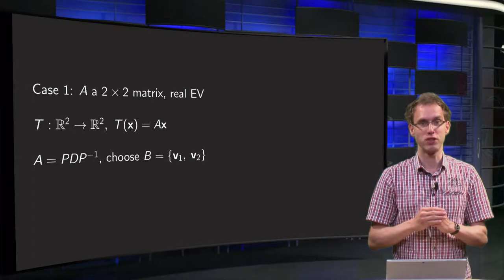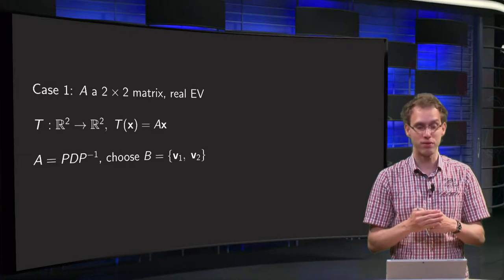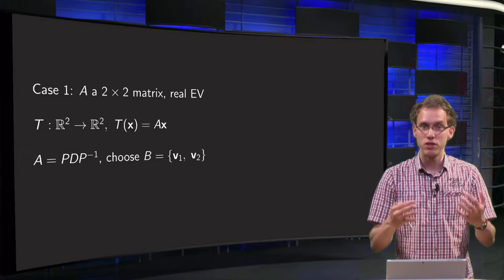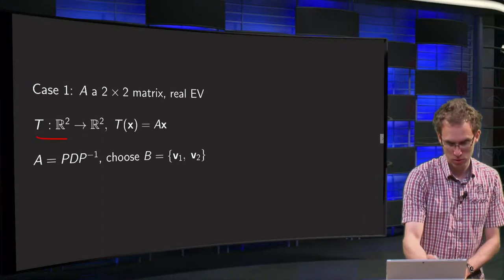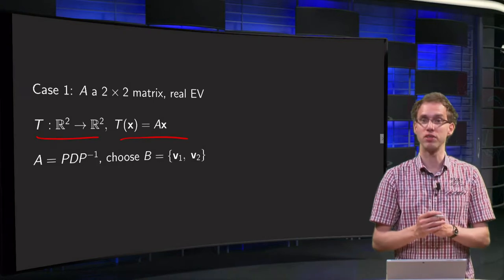Let's start with the first case. Suppose we have a 2×2 matrix A with two different real eigenvalues. Then we can see this as a mapping T from R² to R², where T(x) equals Ax.